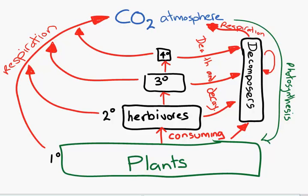The last thing to think about with this diagram is the implications on global warming. We know that carbon dioxide in the atmosphere contributes to reflecting heat back, causing global warming — we're pretty sure anyway. The process that takes CO2 out is photosynthesis, and I should probably be drawing this as a much bigger arrow — it's a very significant process. As long as we have plants, they are taking out CO2 from the atmosphere.